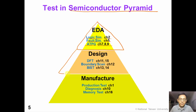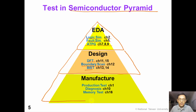In the middle of this pyramid, for the design-related topics: for DFT, you can refer to chapters eleven and fifteen. For boundary scan, you can watch chapter twelve. For the built-in self-test topic, you can watch chapters thirteen and fourteen. At the bottom of this pyramid, for the manufacturing industry, you might be interested in production tests in chapter one, diagnosis in chapter ten, and memory tests in chapter sixteen.